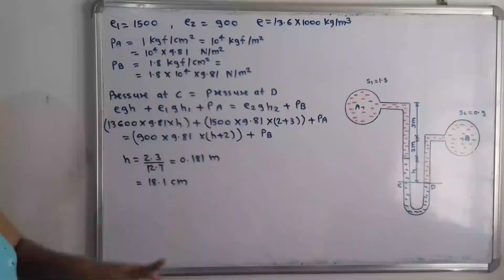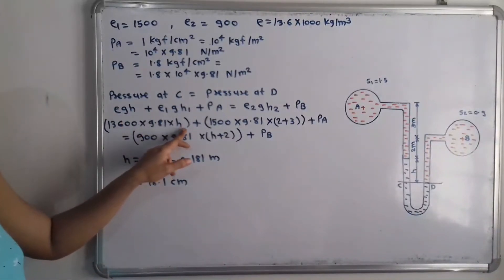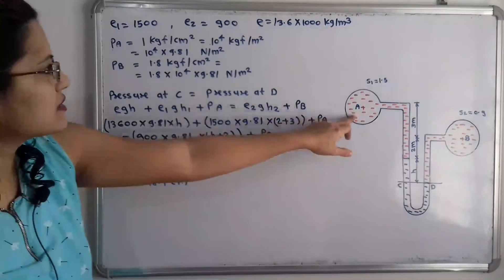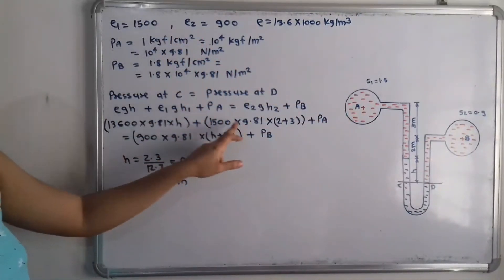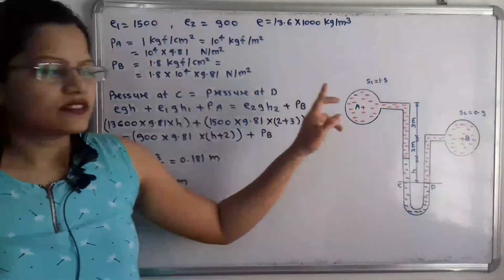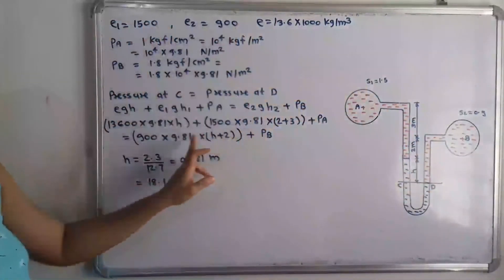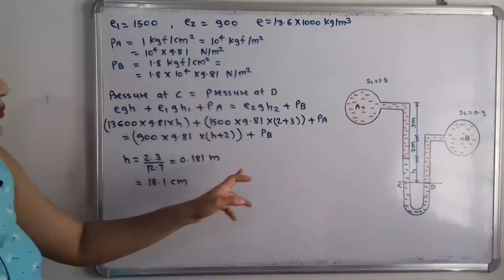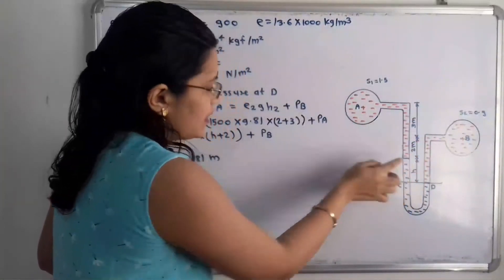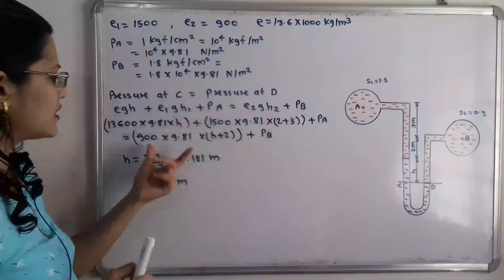Substituting values: rho_mercury × g × H = 13600 × 9.81 × H. For the fluid in pipe A: rho1 × g × h1 = 1500 × 9.81 × (2 + 3) = 1500 × 9.81 × 5. Adding PA on the left side. On the right side: rho2 × g × h2 = 900 × 9.81 × (2 + H), plus PB.